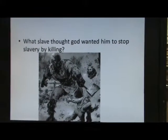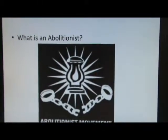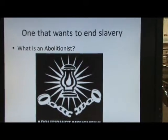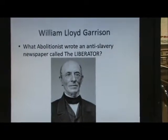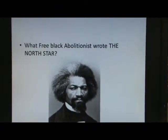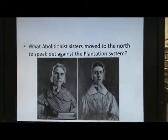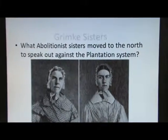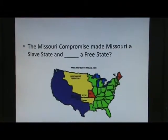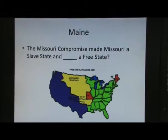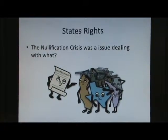Review questions: Which slave thought God wanted him to stop slavery through killing? That's Nat Turner. What is an abolitionist? Someone who wants to stop slavery. Which abolitionist wrote the anti-slavery newspaper The Liberator? William Lloyd Garrison. Which free Black abolitionist wrote The North Star? Frederick Douglass. Which abolitionist sisters moved north to speak out against the plantation system? The Grimké sisters. The Missouri Compromise made Missouri a slave state and Maine a free state, keeping the balance.